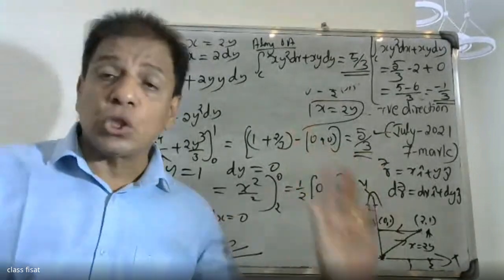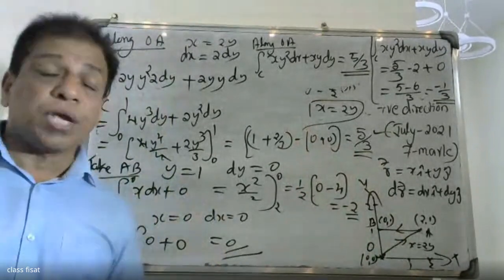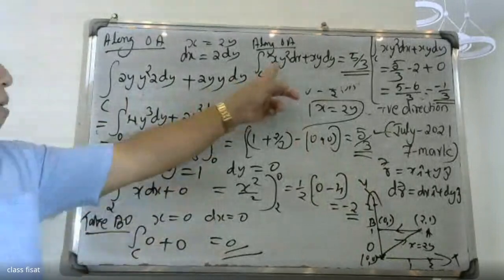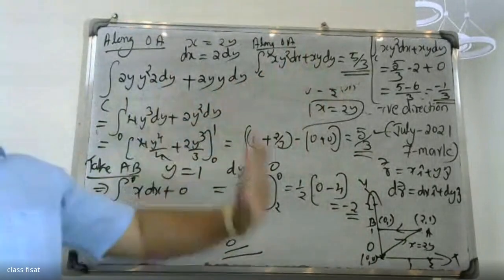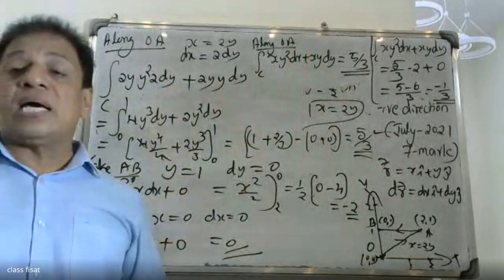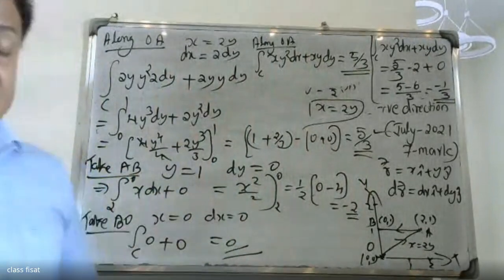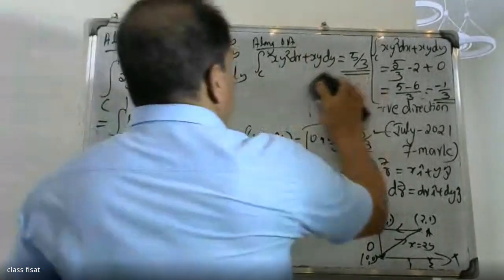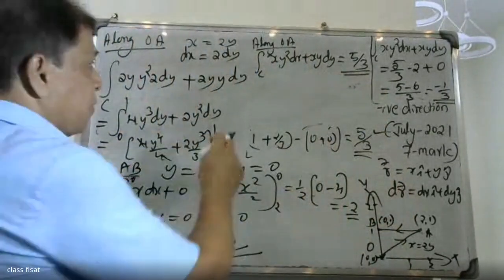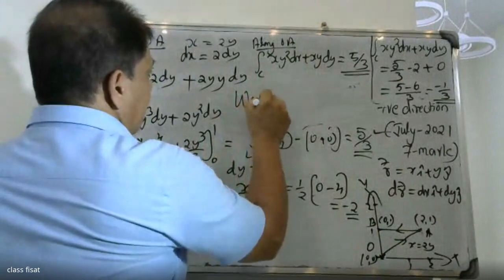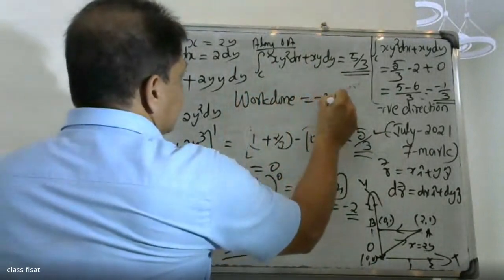Along BO, x is 0, so both terms become 0. The contribution from path BO is 0. The final answer for the total work done is minus 1.